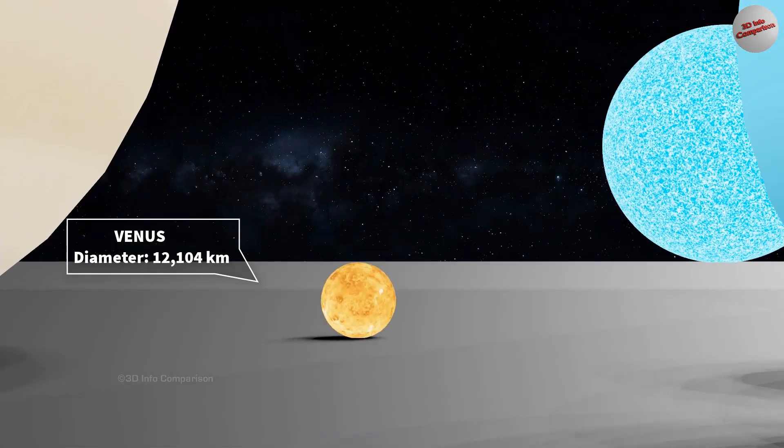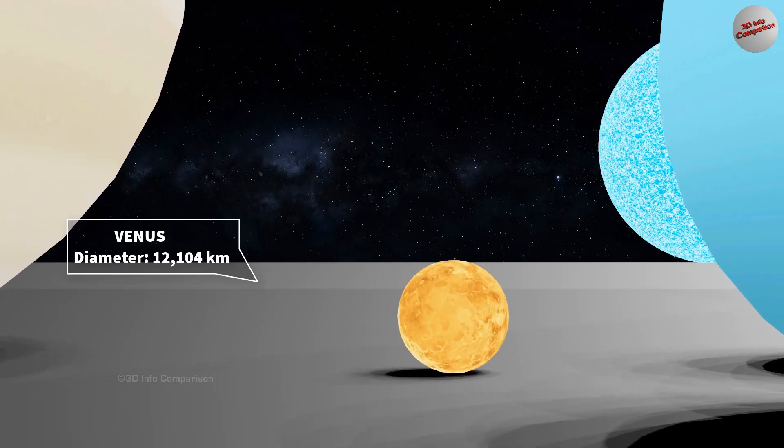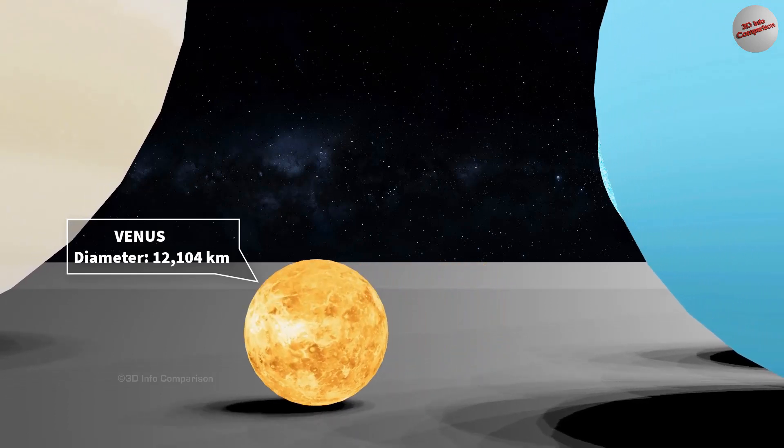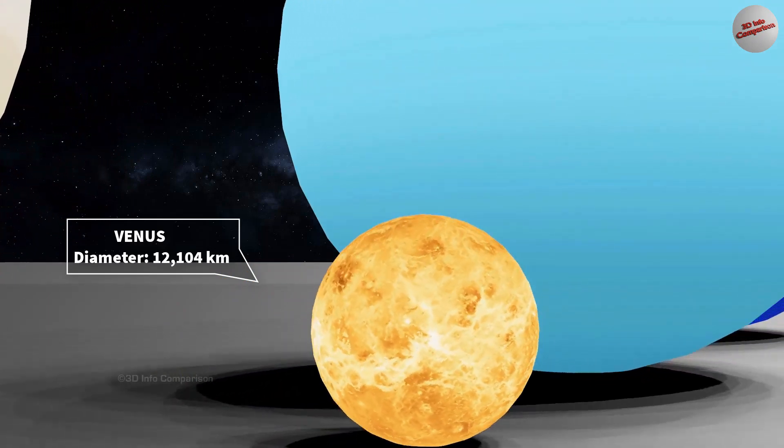Venus is the second planet from the Sun and is often referred to as Earth's sister planet due to its similarities in size and composition. The diameter of Venus is approximately 12,104 kilometers.